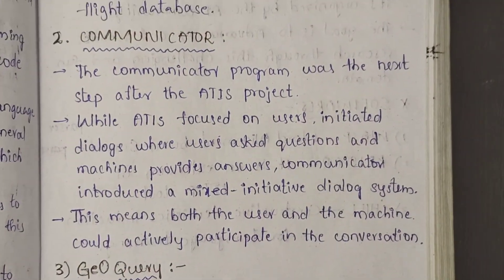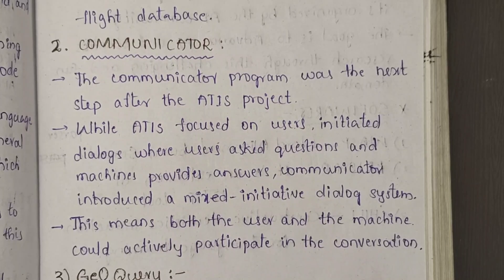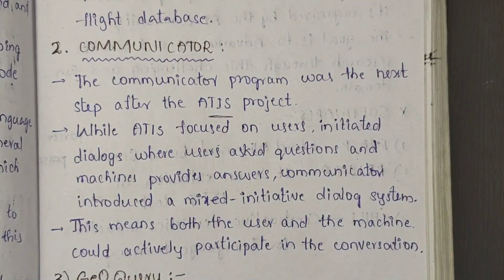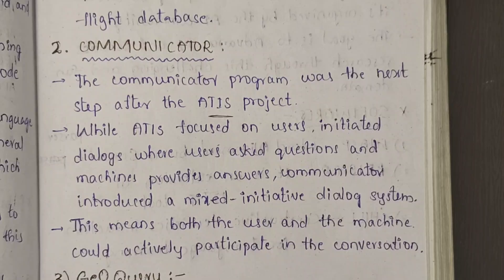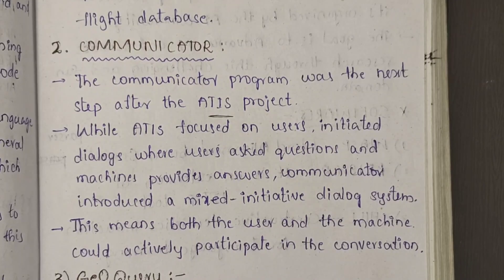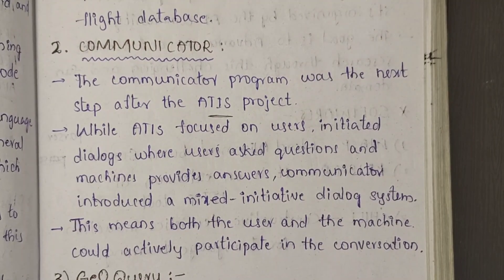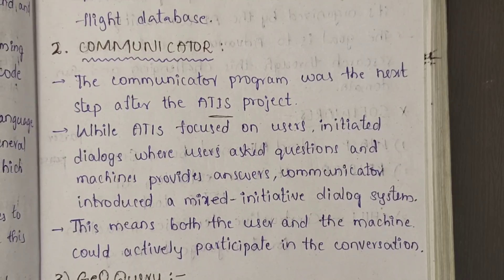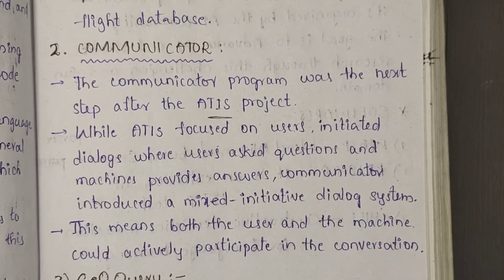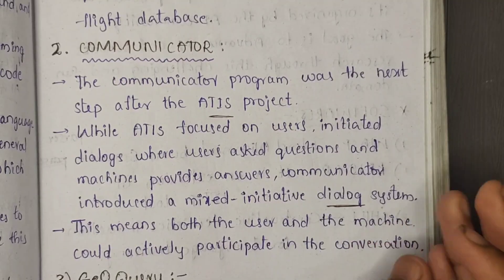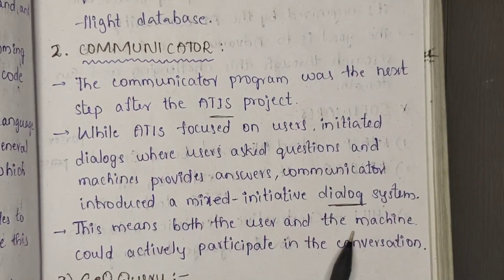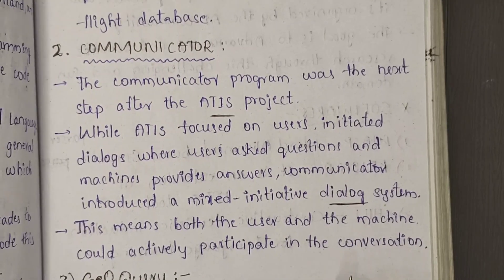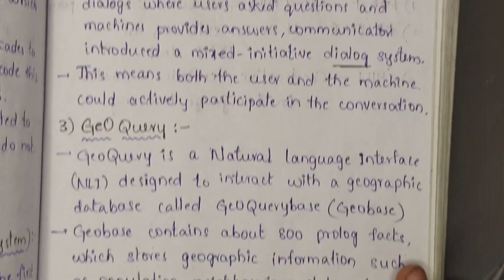Communicators: the Communicator program was the next step after the ATIS project. While ATIS focused on user interaction with dialogues — where the user asks questions and the machine provides answers — Communicators aimed for face-to-face interaction between human and machine. It introduced a mixed interactive dialogue system, meaning both the user and the machine actively participate in the conversation to build efficient conversation.